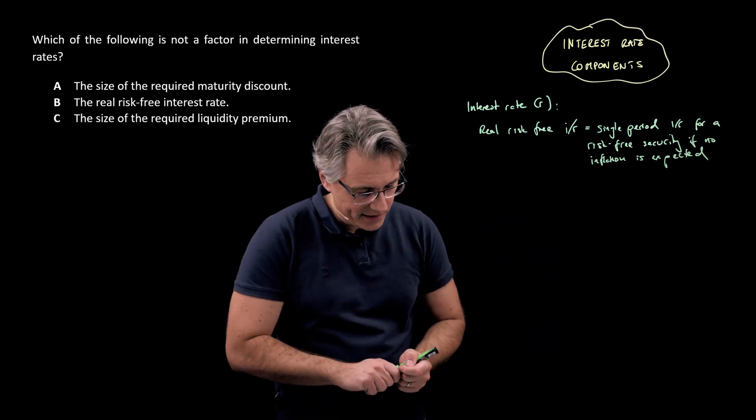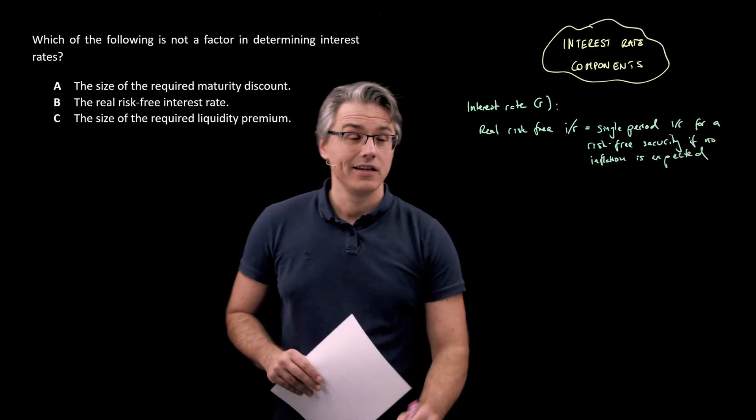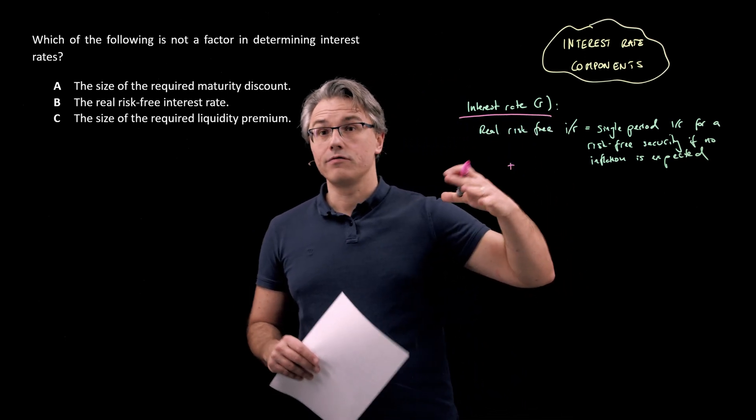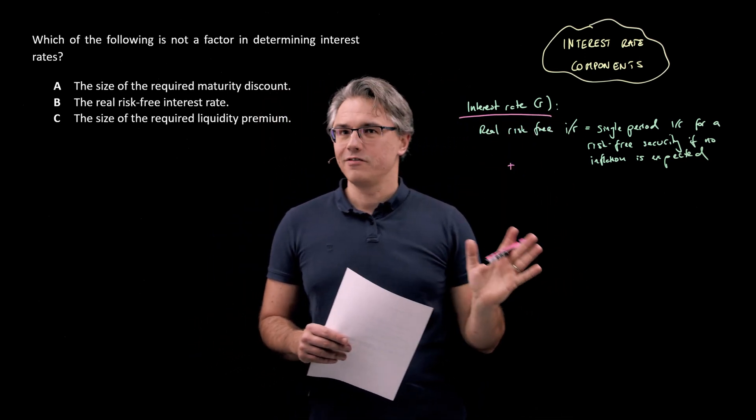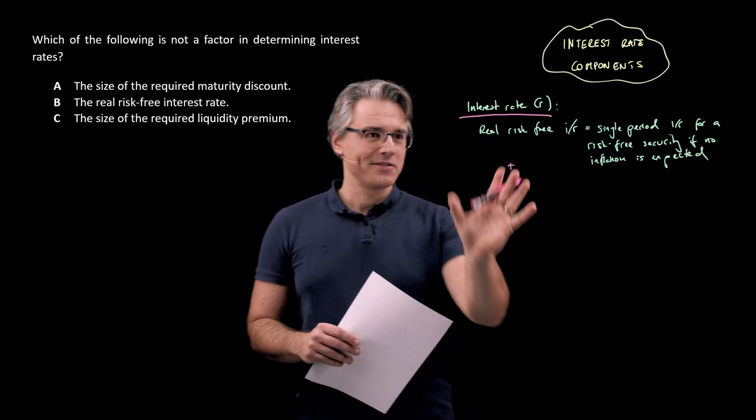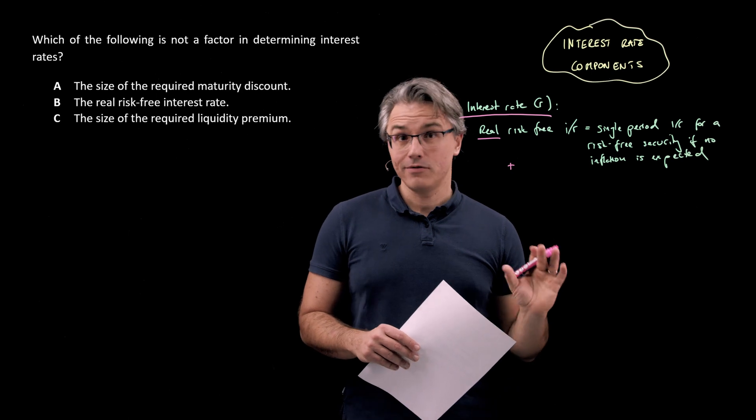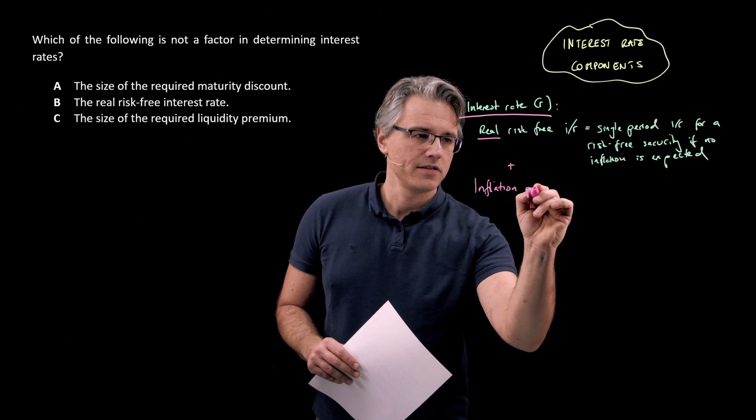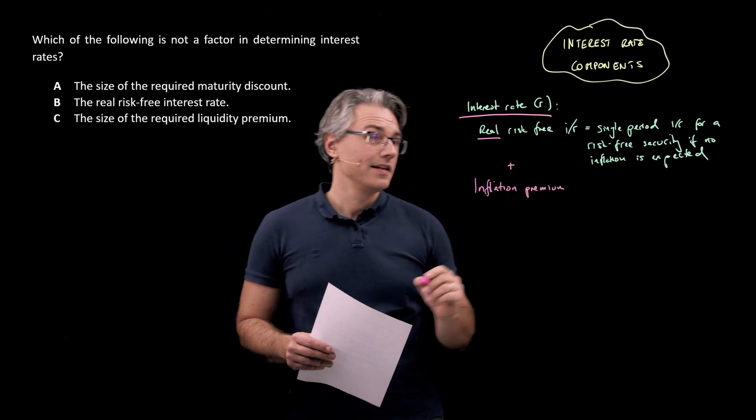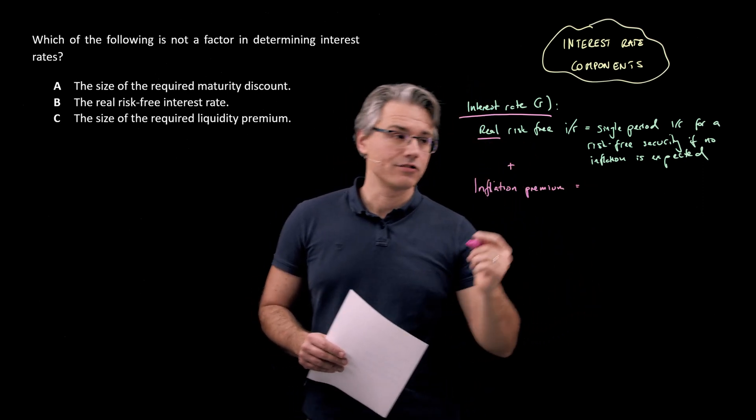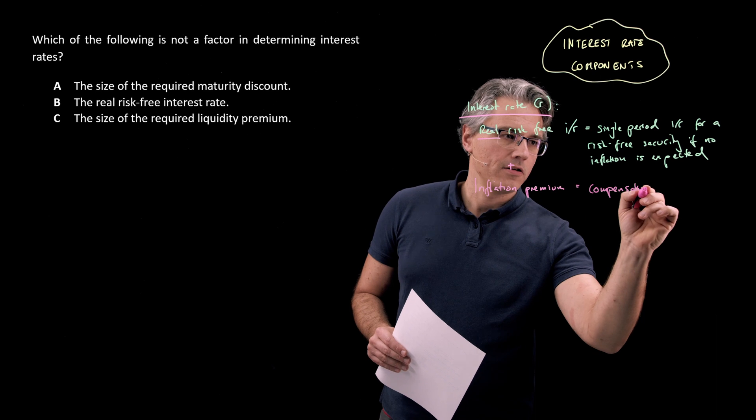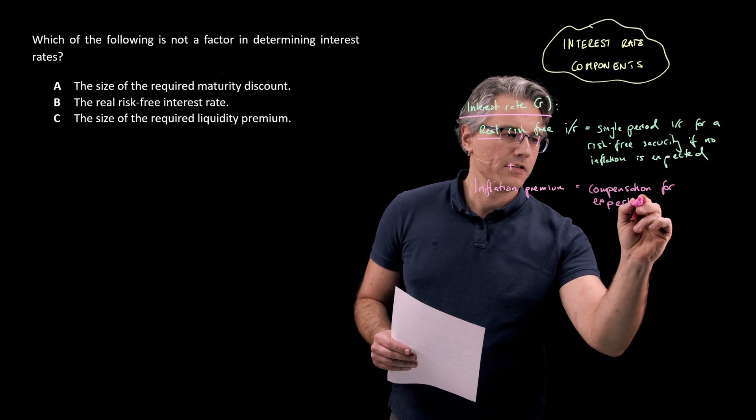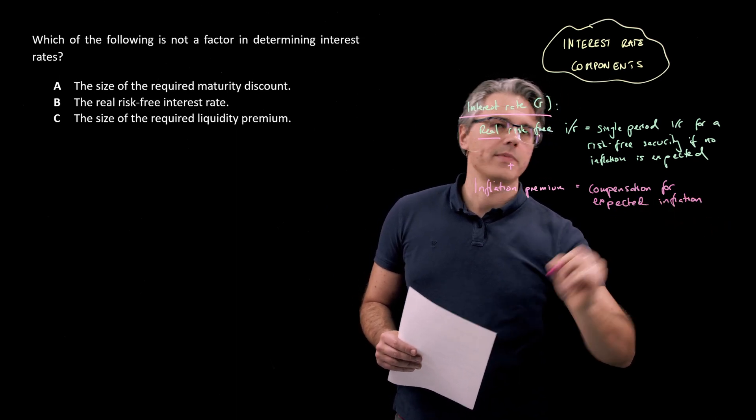Because inflation typically does exist, at least at some level in most economies, on top of this, when we create expectations of real interest rates, actual interest rates, I use the term real here, which is very imprecise, because real typically means without inflation or with zero inflation, we add an inflation premium, inflation premium on top of this. And this is, the inflation premium is obviously the additional compensation, so something extra for expected inflation. So compensation for expected inflation. And because these rates are going to be forward-looking, I'm using the term expected.